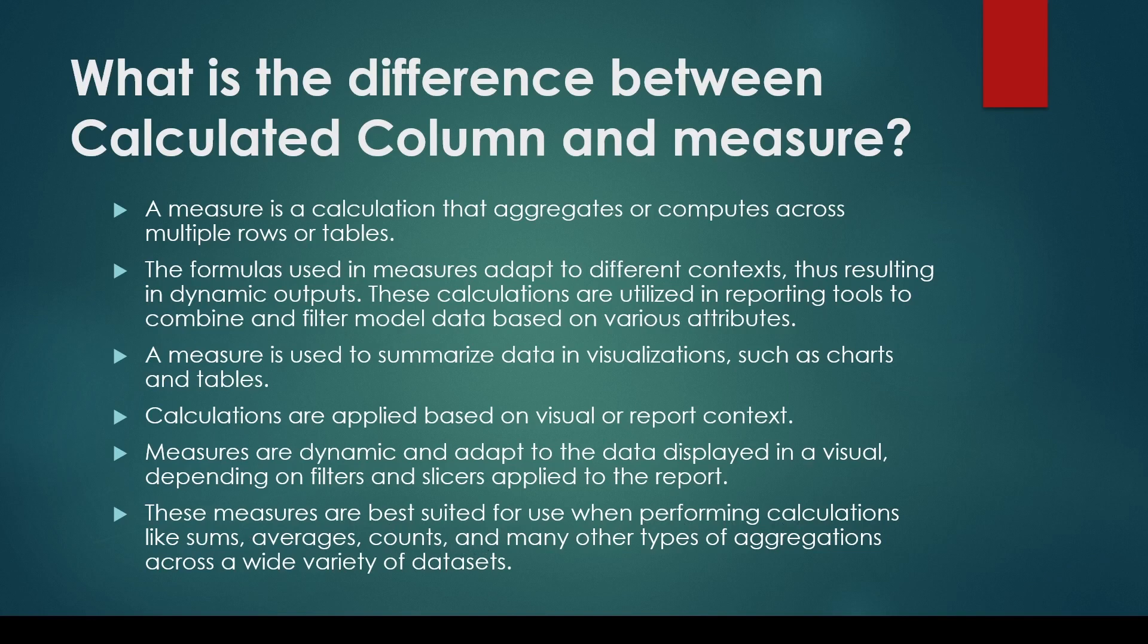You may be asked when to choose a calculated column versus a measure. There are times when there is no alternate. For example, if I want to do division, like I calculate margin percentage, division should always be a measure because division should happen after the aggregation of the columns or fields - sum of A divided by sum of B.